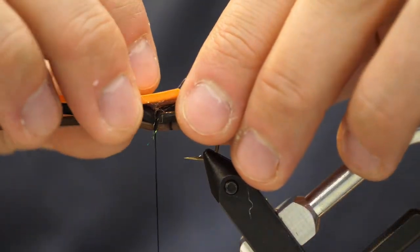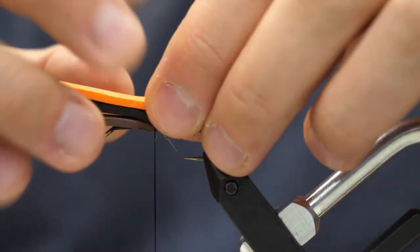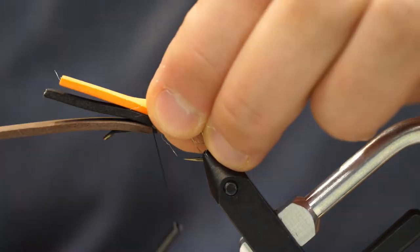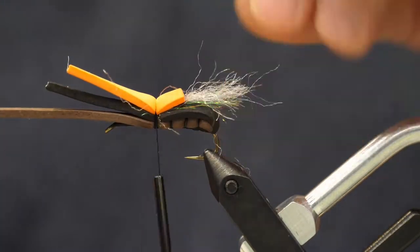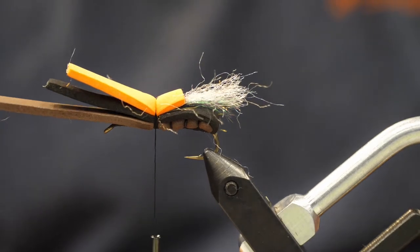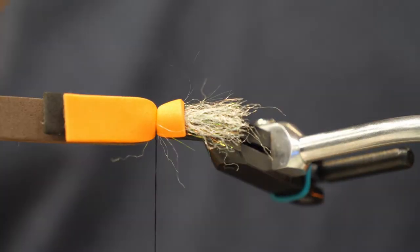Now we're going to put on our third strip of foam, and I like to use a high-vis color because these do sit deep in the water, and the high-vis really lets you see where you're fishing this. It's also going to push down that wing and make it lay nice and flat.